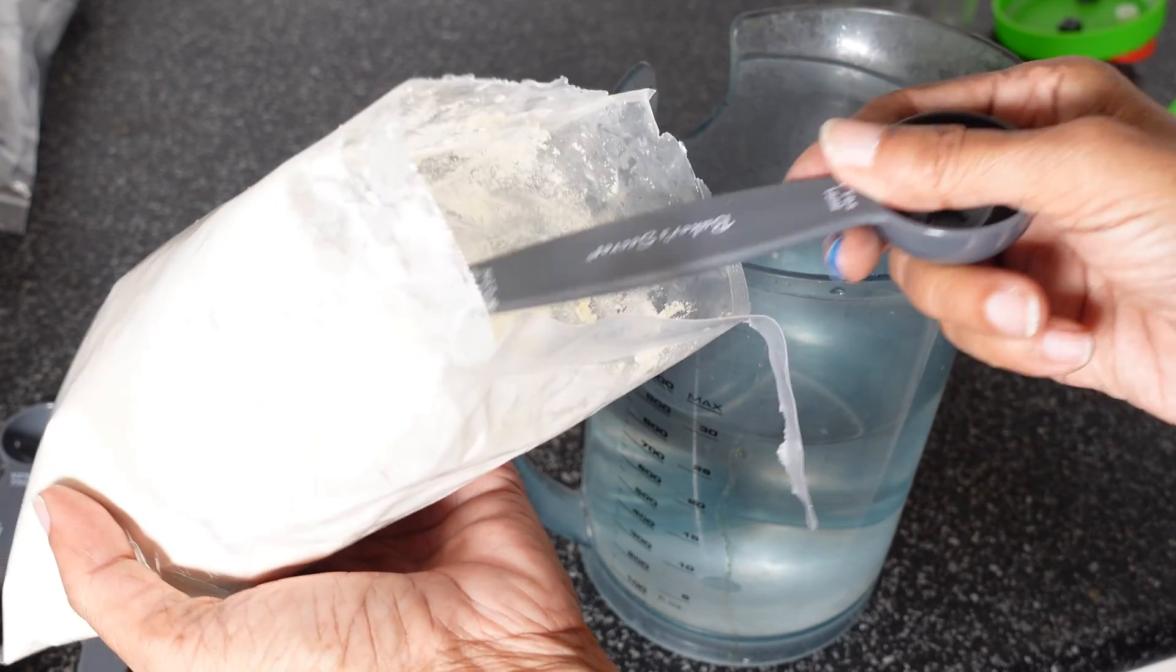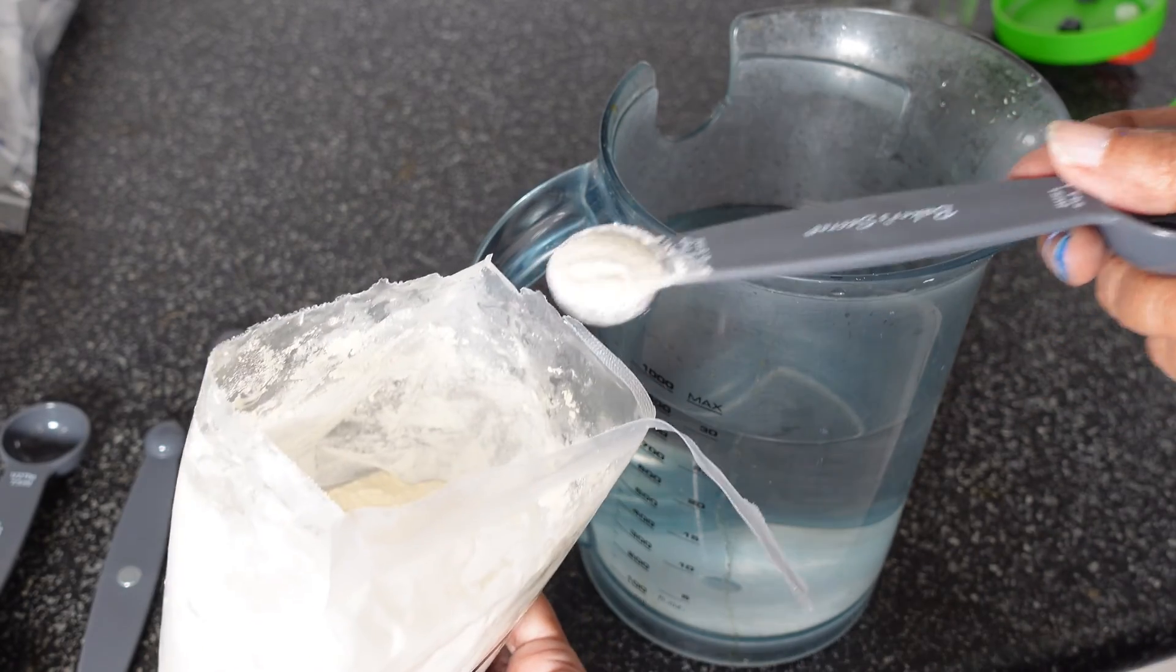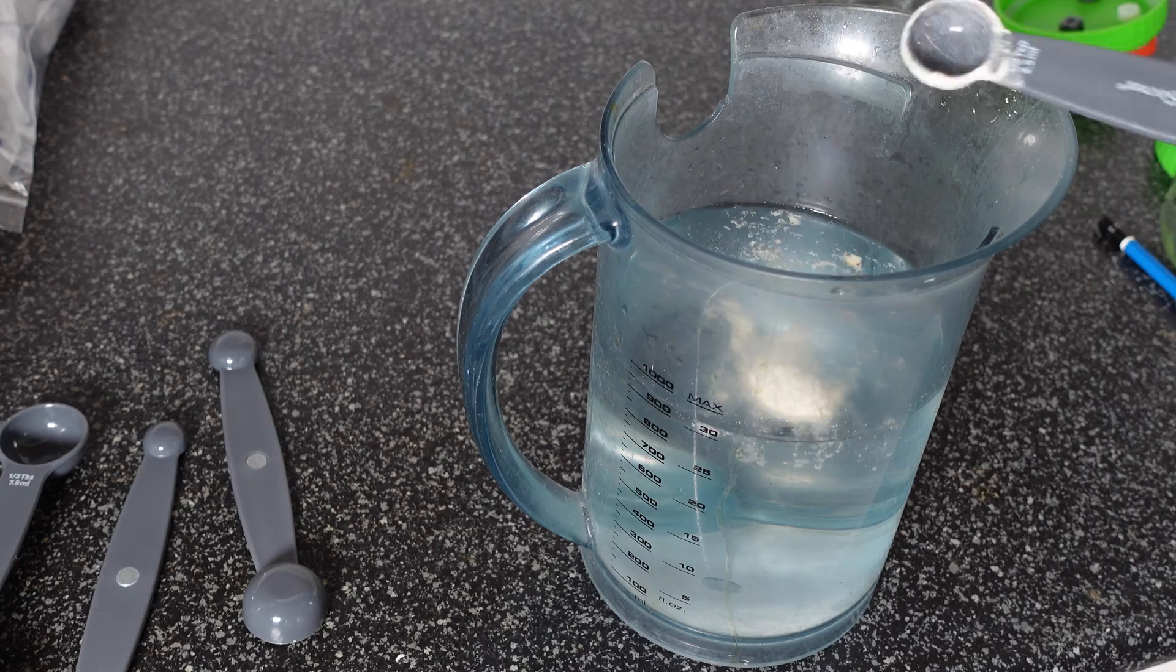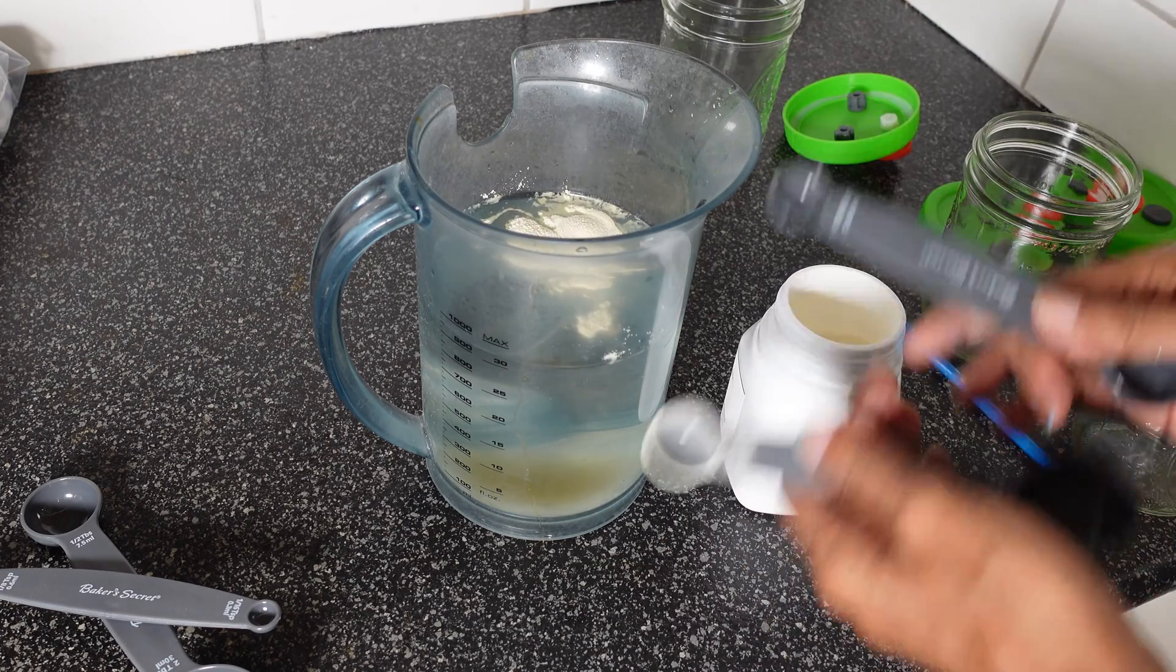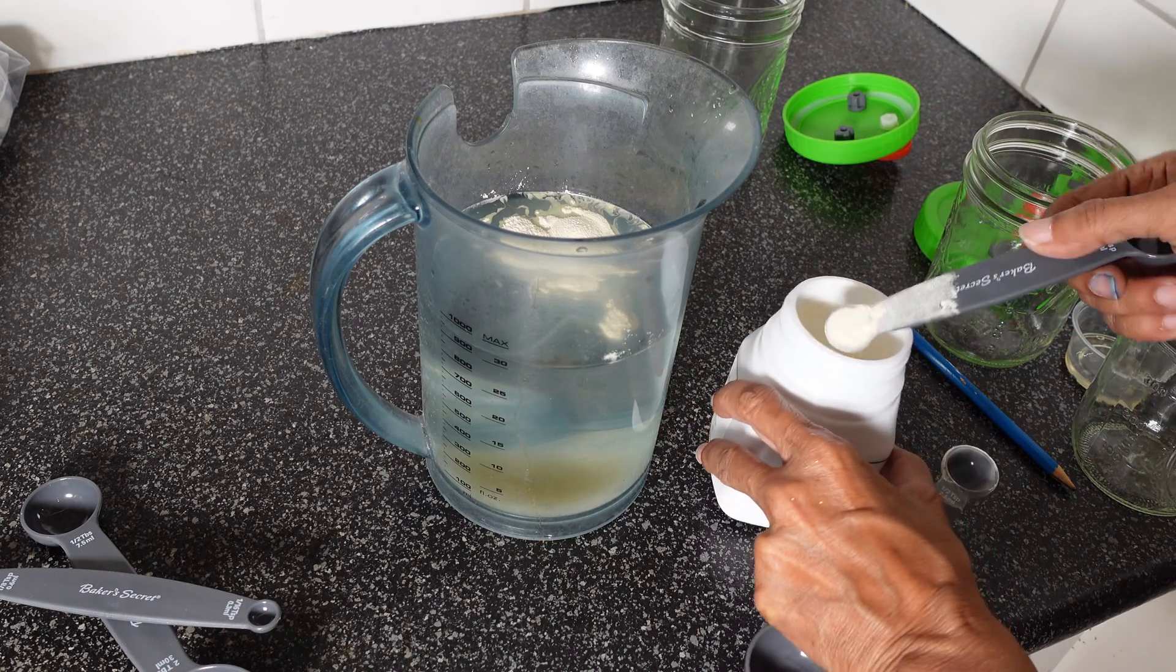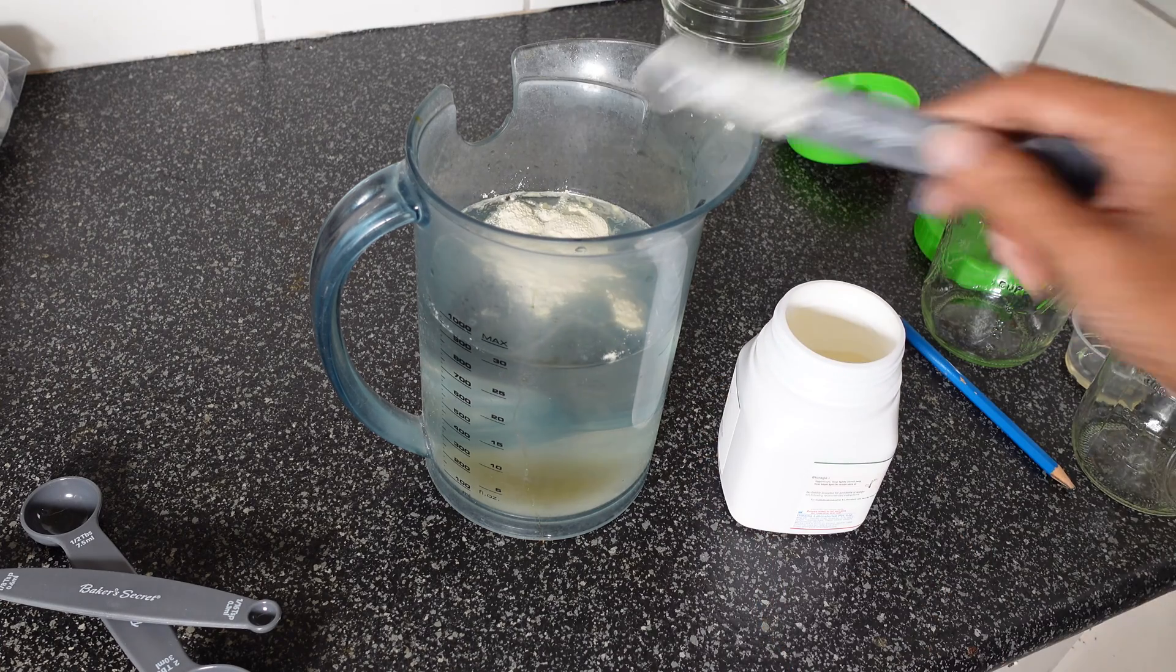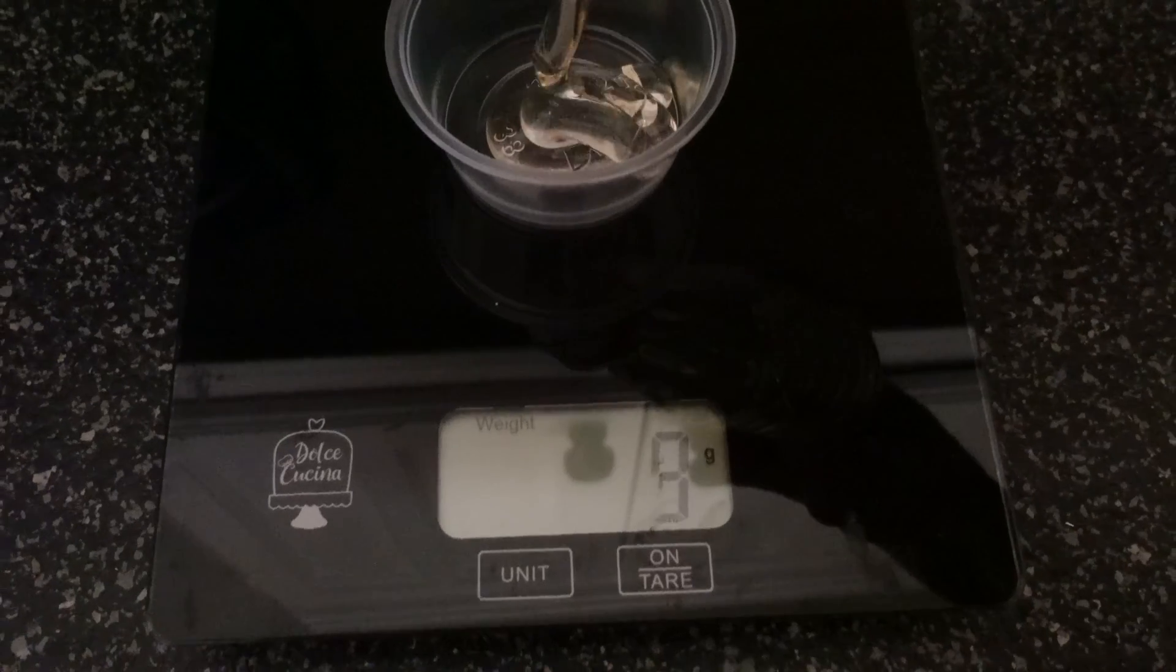To 900 milliliters of filtered warm water I added half a teaspoon of light malt extract, three quarter teaspoon of peptone, and 30 grams of corn syrup.